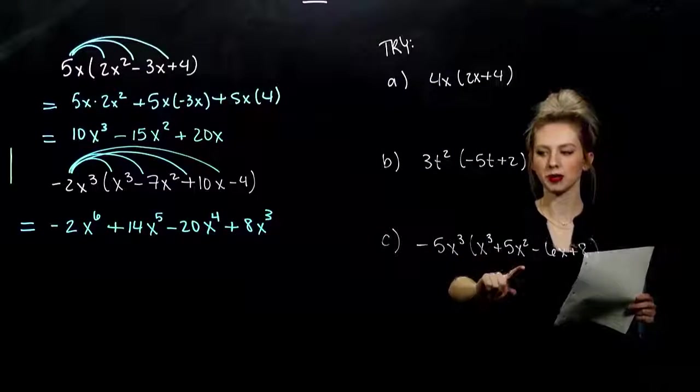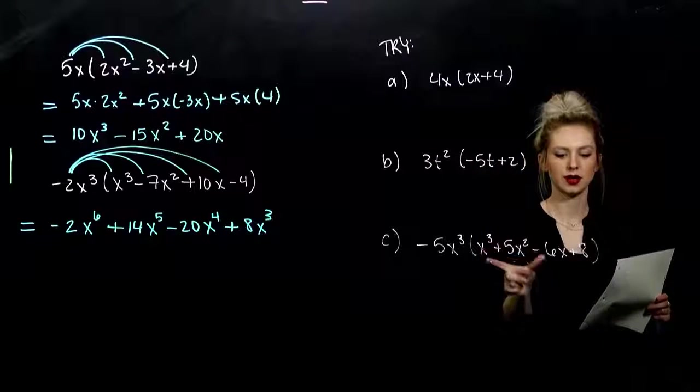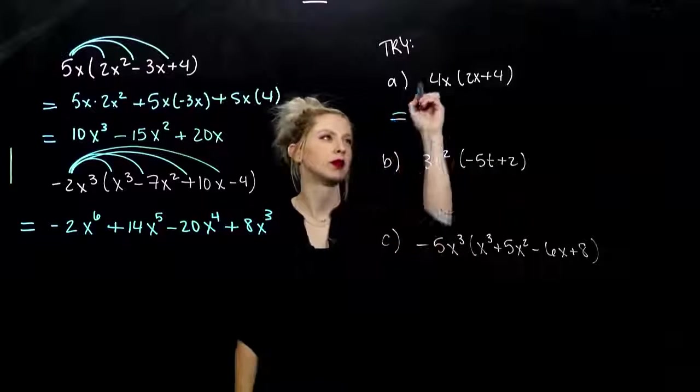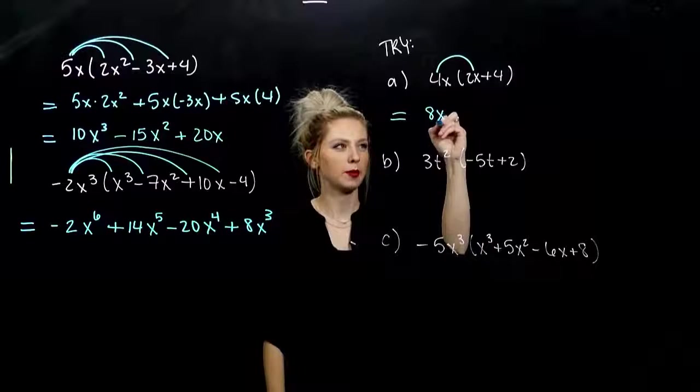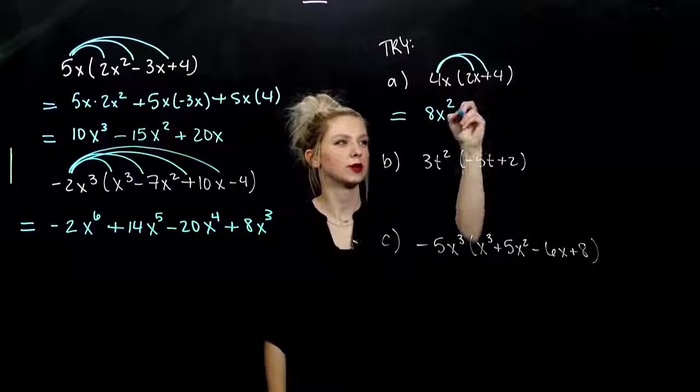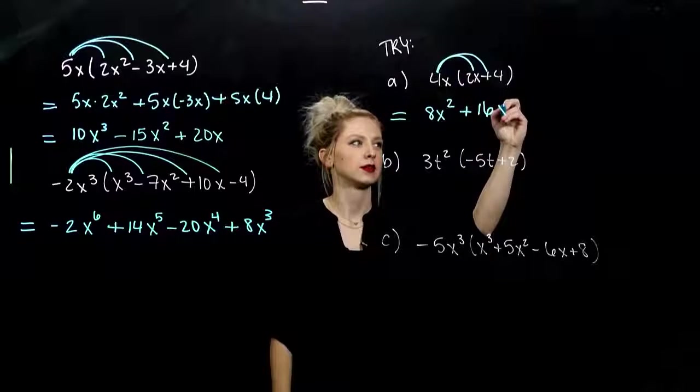So, go ahead and take these next three. Multiply the monomial into the polynomials that are present. In the first one, first term, 4 times 2 will give me 8. How many factors of x? 2 of them. 4 times 4? 16. And how many factors of x? 1 of them.